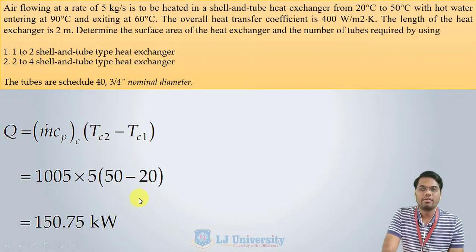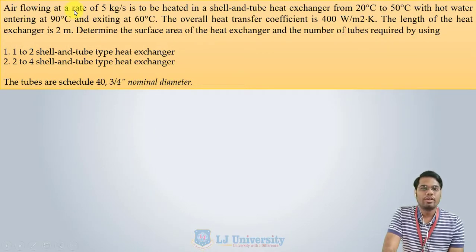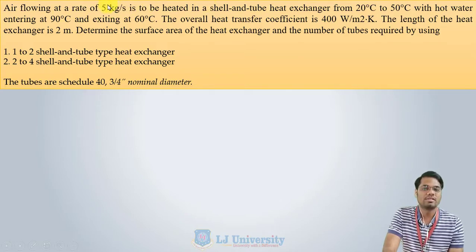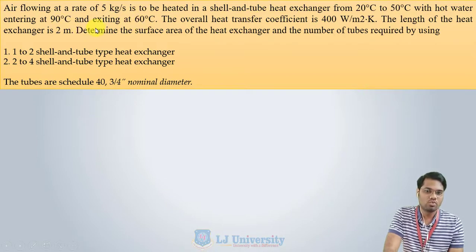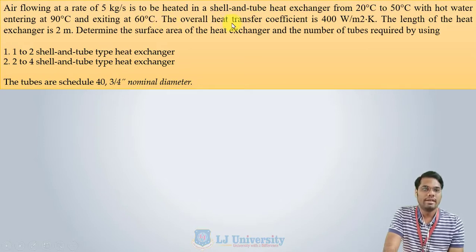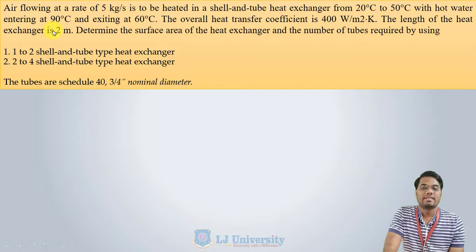Let us solve one more numerical. Air is flowing at a rate of 5 kg/s to be heated in a shell and tube heat exchanger from 20°C to 50°C — TC1 and TC2 respectively — with hot water entering at 90°C and exiting at 60°C — TH1 and TH2. The overall heat transfer coefficient is 400 W/m²K and the length of the heat exchanger is 2 m.